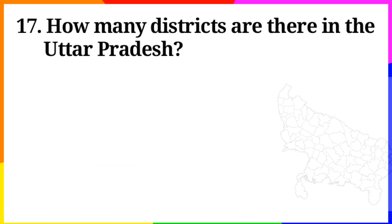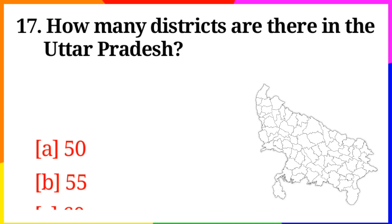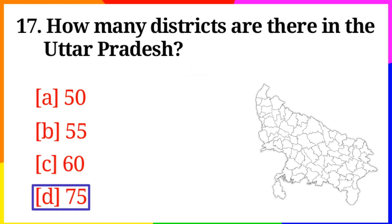Question No. 17: How many districts are there in Uttar Pradesh? Option A: 50, B: 55, C: 60, D: 75. Answer is Option D: 75.